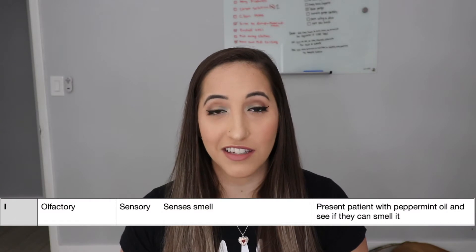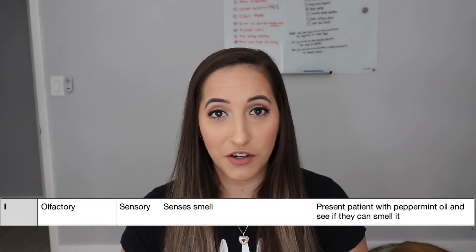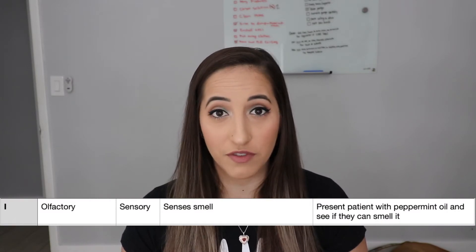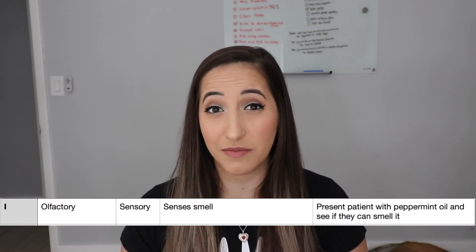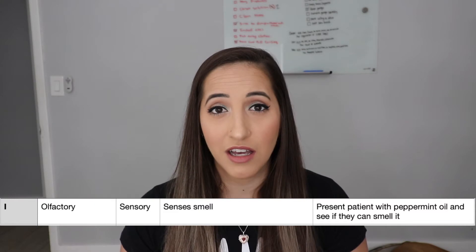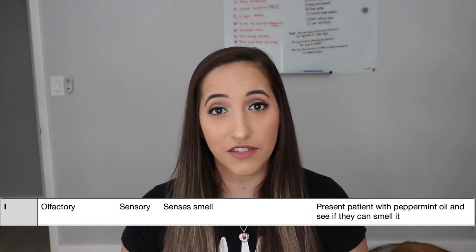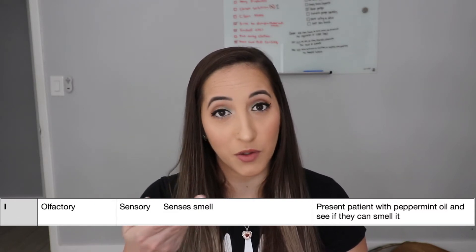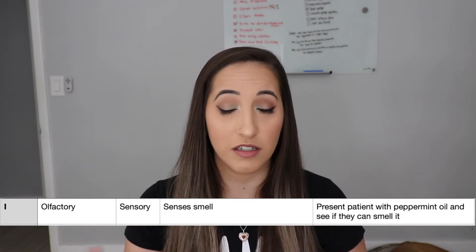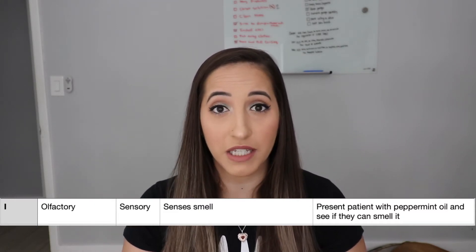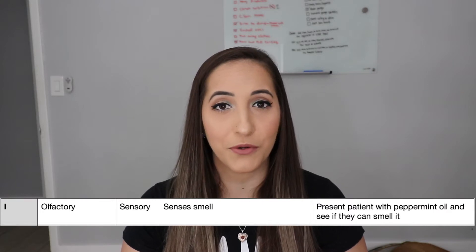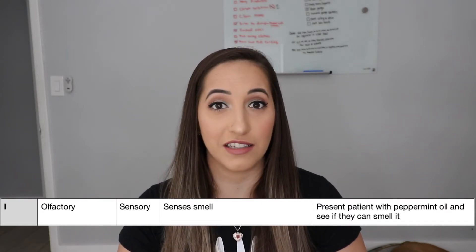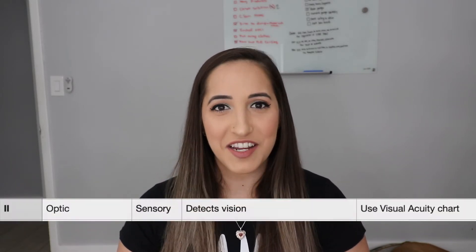Cranial nerve number one is the olfactory nerve. It is a sensory nerve that is used to detect smell. What you can do to test for this is put something that has a nice odor, like coffee beans or peppermint oil, in front of a patient's nose and see if they can smell it.